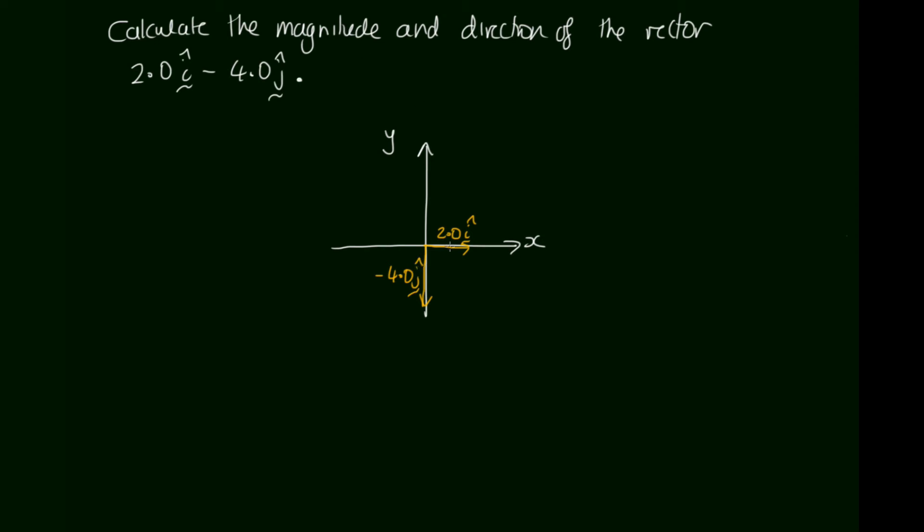Now to work out the magnitude we're going to have to add these two vectors head to tail. So here's our first vector. We'll draw our second vector on the tail of that vector. So that's equal to minus 4.0j. And then to work out our resultant we go from the tail of this vector to the head of this one. That's our resultant and we'll want to calculate that angle in there.